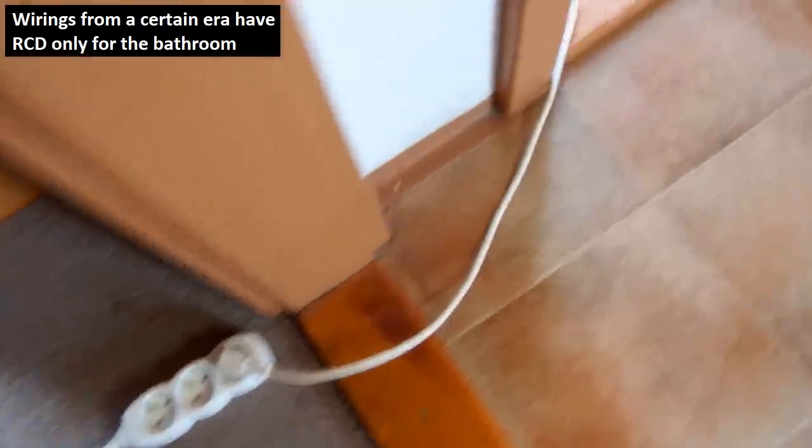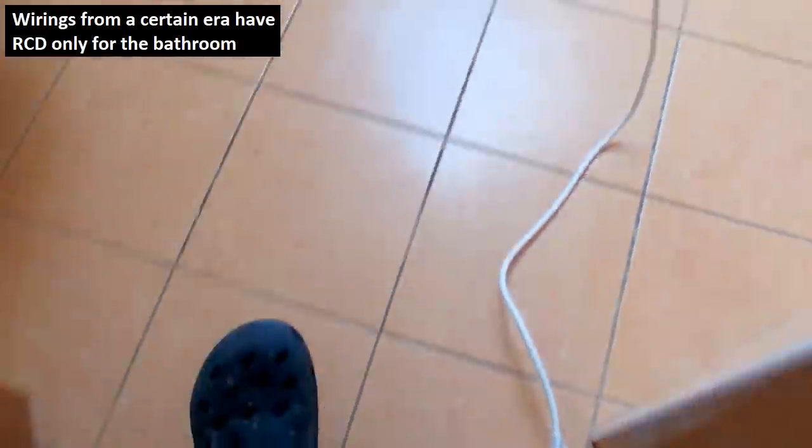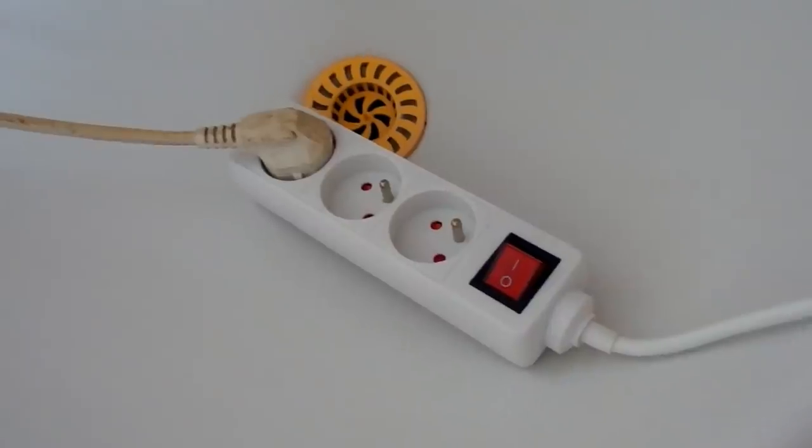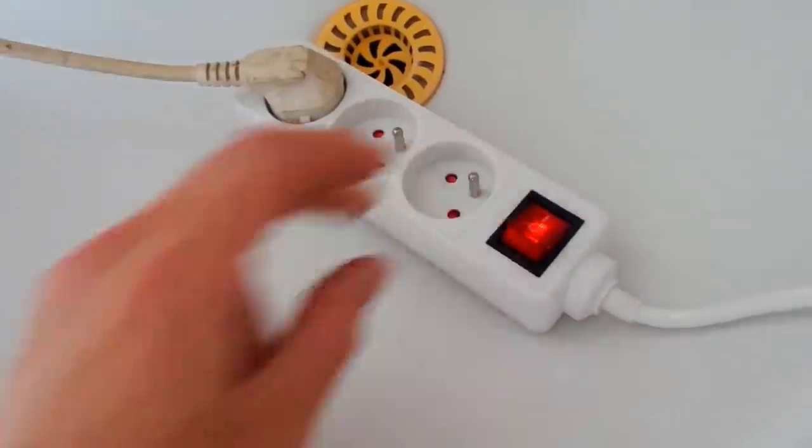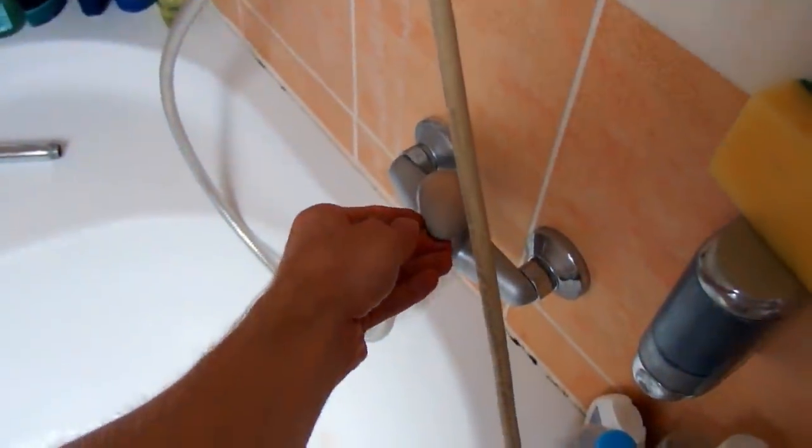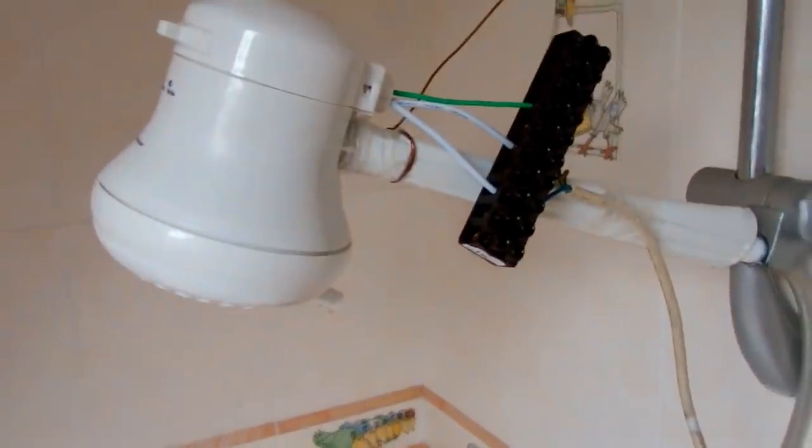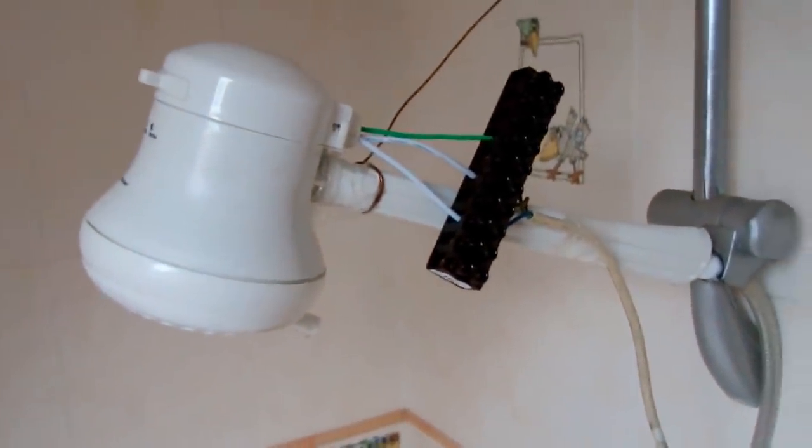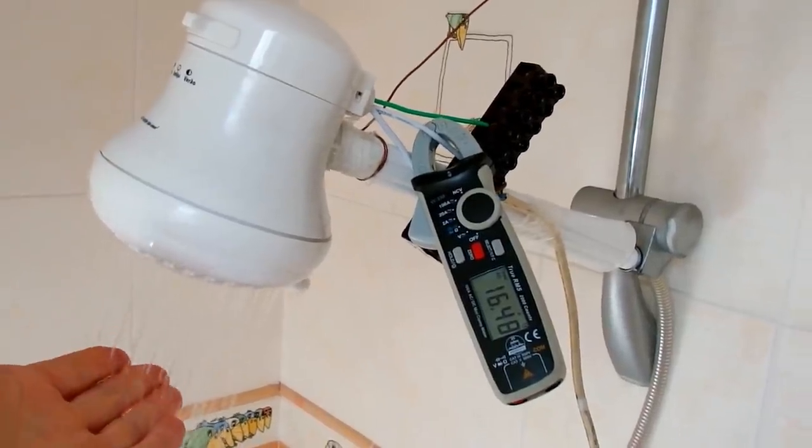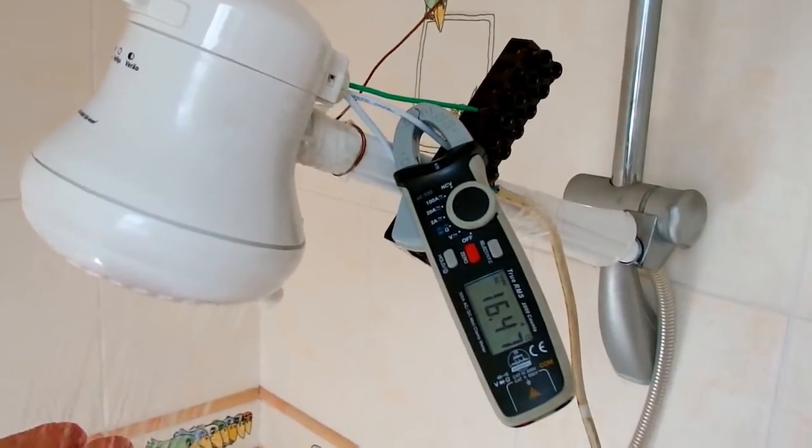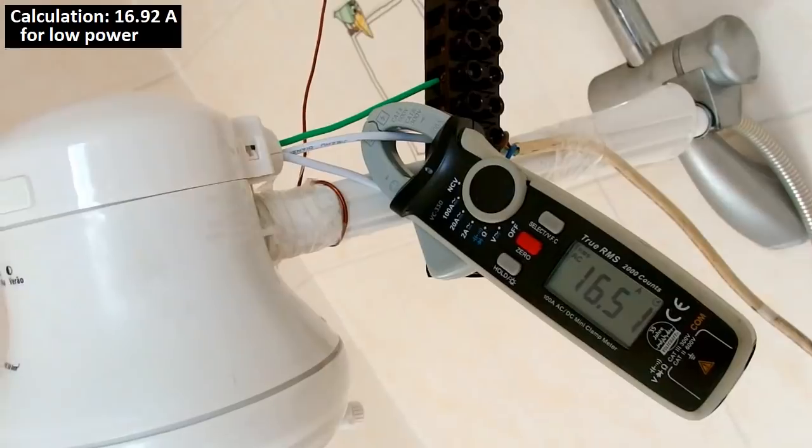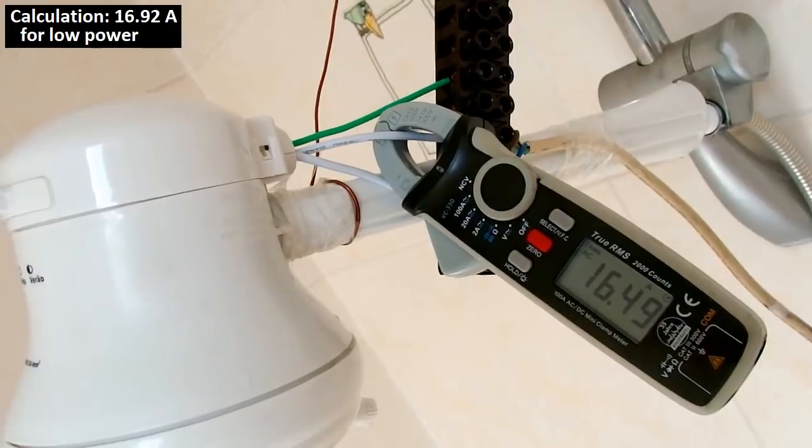So let's plug it in a different room with no RCD. And now a second try. Turn it on, turn water on. Water is coming from it. It's nicely warm and the current is 16.4 amps. So my calculation was quite close.